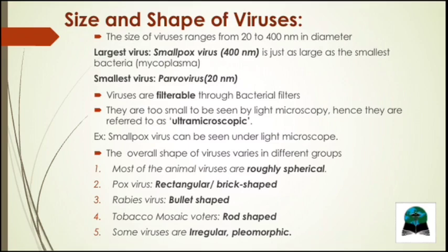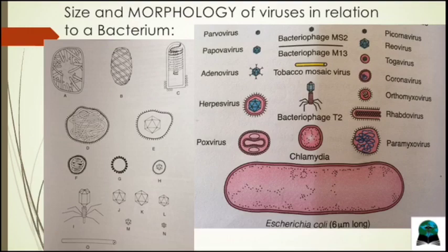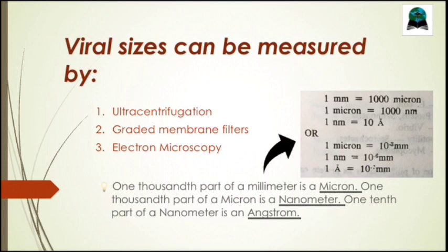The overall shape of viruses varies in different groups. They can be roughly spherical to rectangular, bullet-shaped, rod-shaped, or pleomorphic like mycoplasma. Viral sizes can be measured by three methods: ultracentrifugation, graded membrane filters, and electron microscopy.